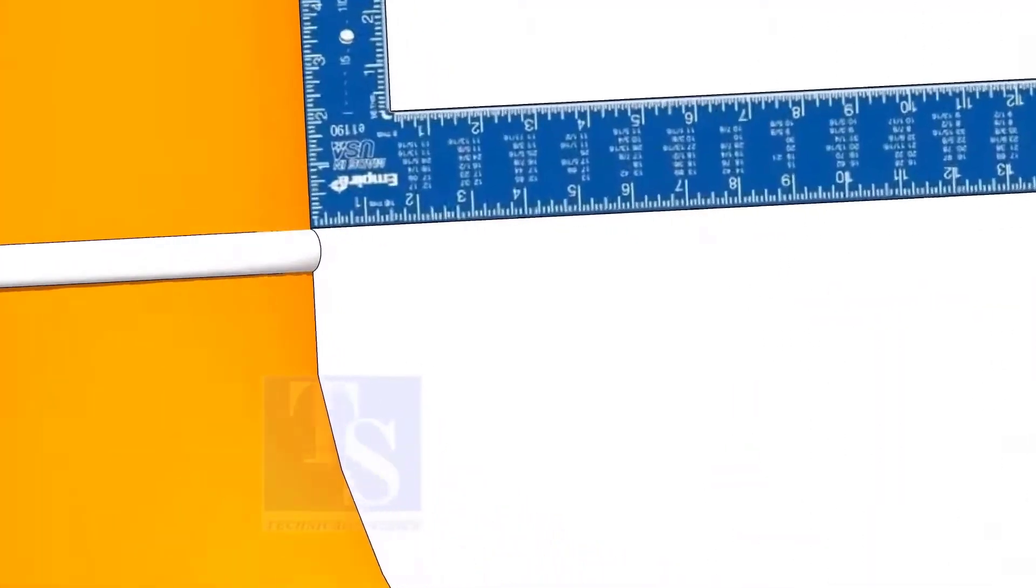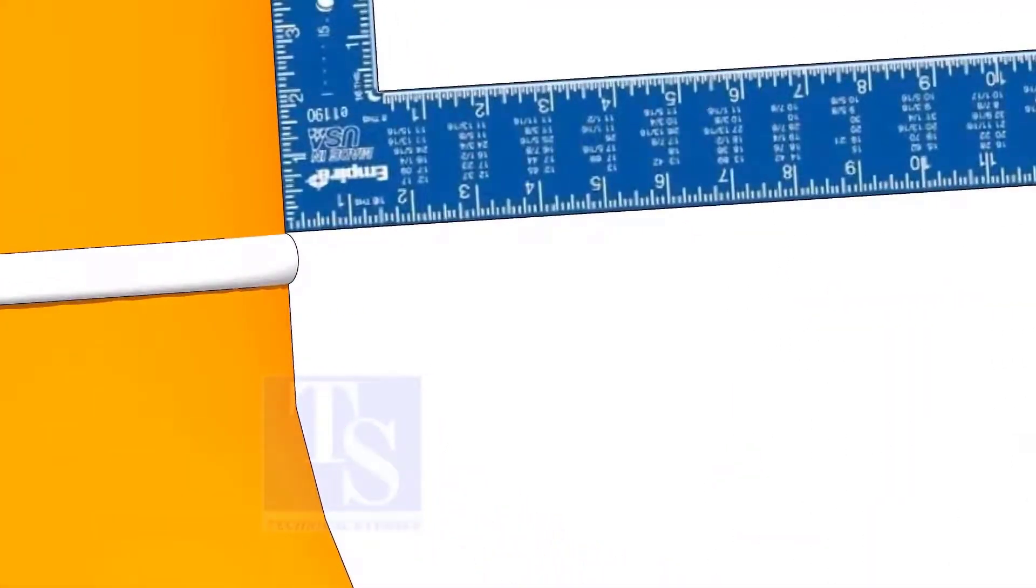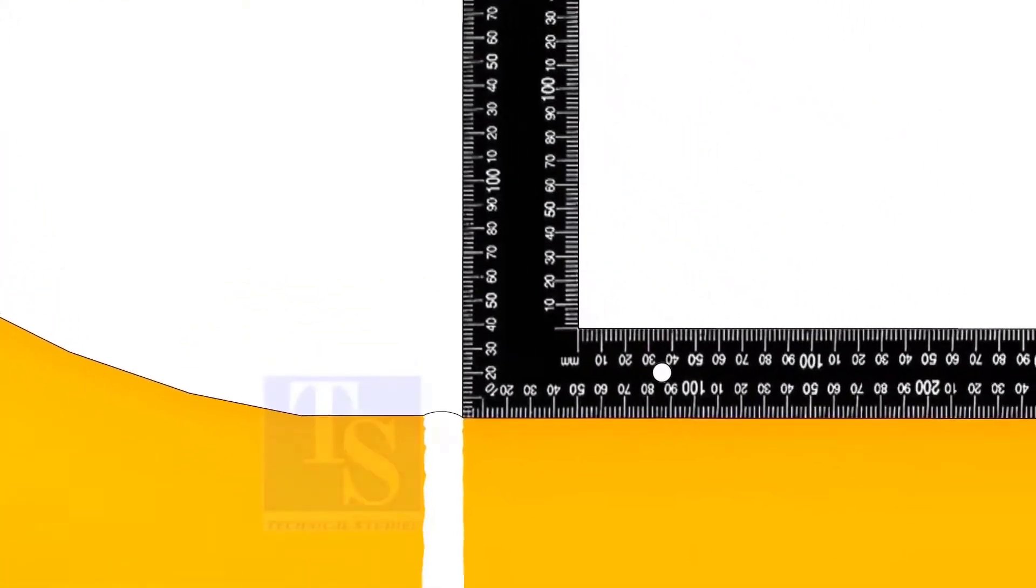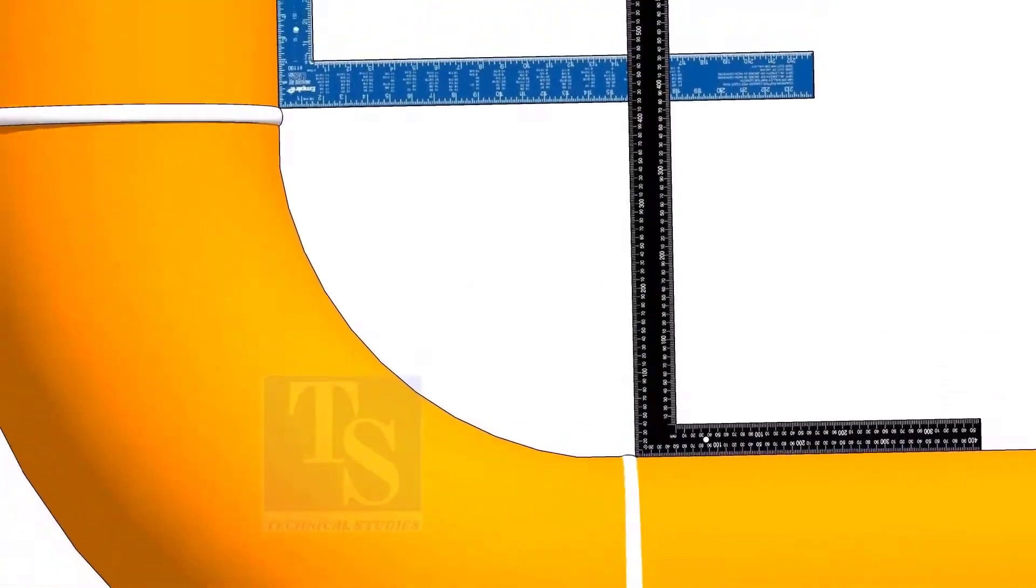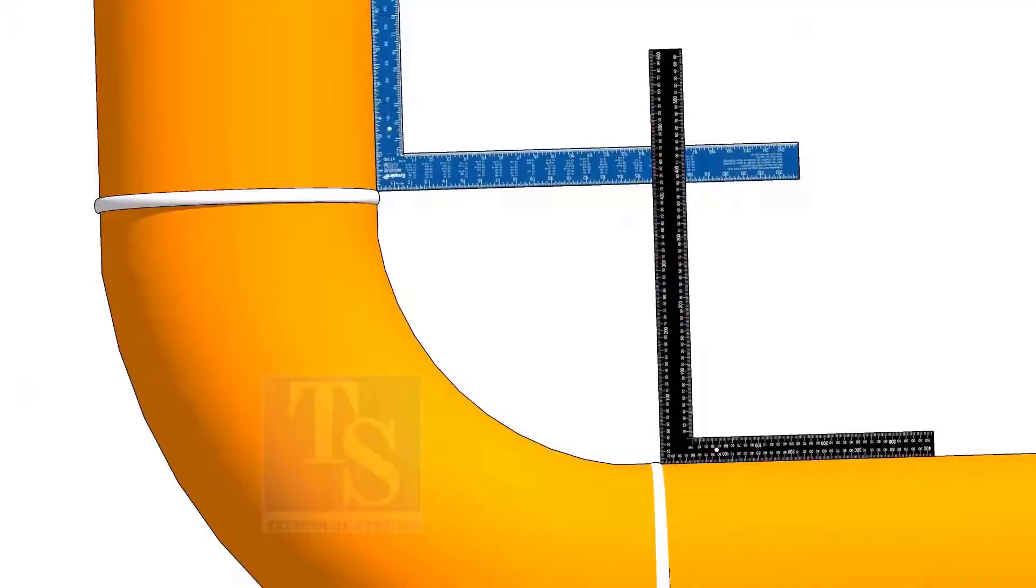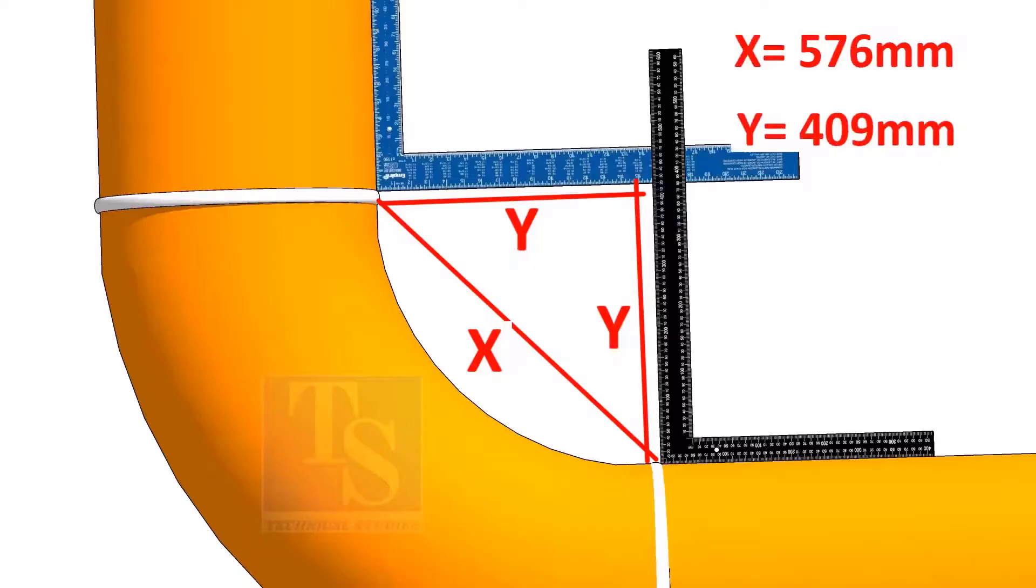Hold the right angles as shown in the previous exercise. Here, X equals 576 millimeters and Y equals 409 millimeters.